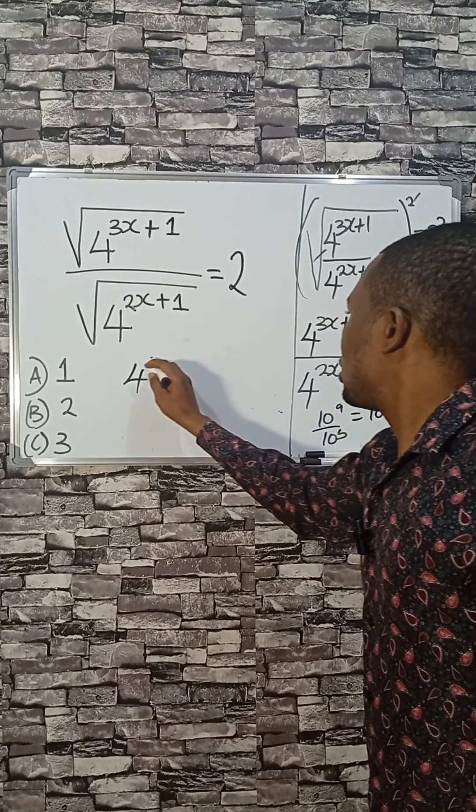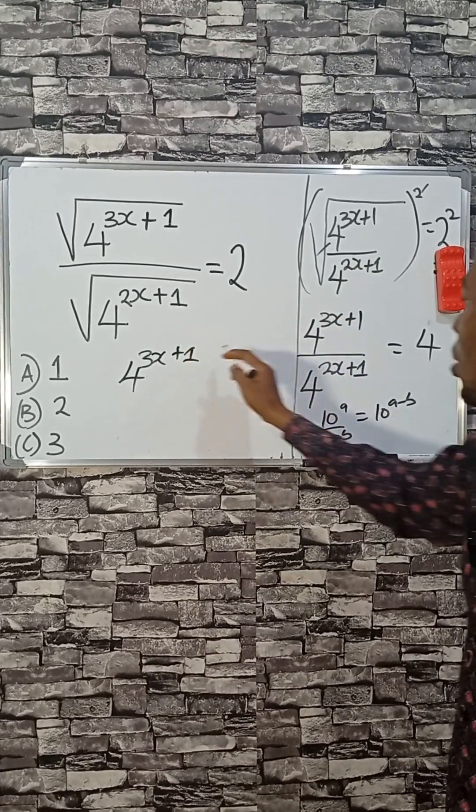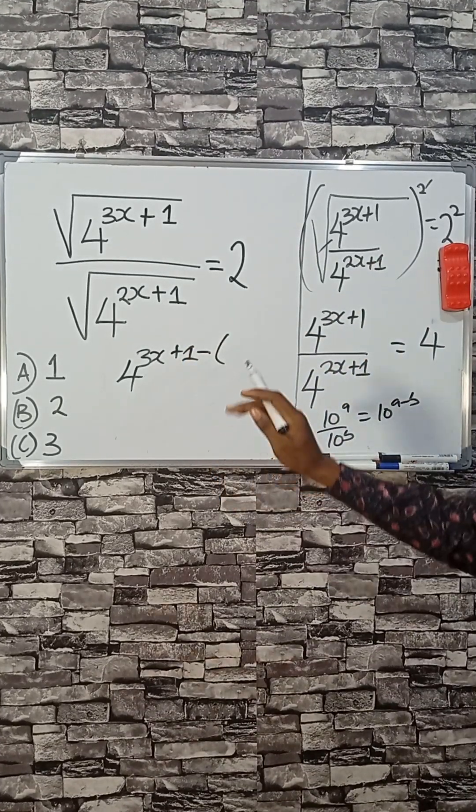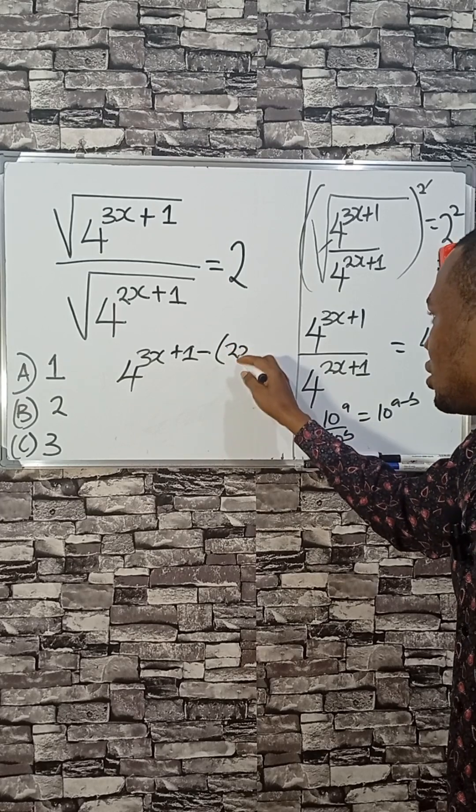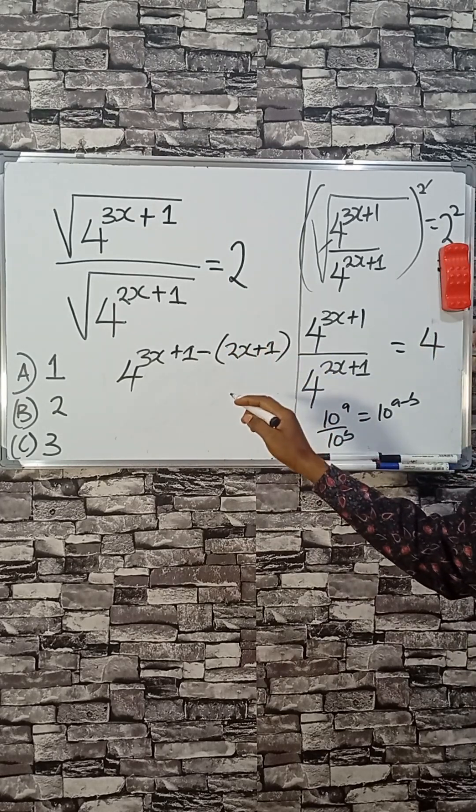3x plus 1, the first power, minus open a bracket. Then, when we subtract this, open a bracket and put the other power. Because the negative sign here will multiply everything in the bracket, inside a bracket. If you don't open the bracket, you won't have it right.